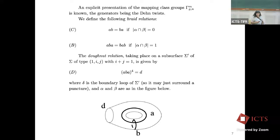I'm going to talk about the presentation of the mapping class group. This is extremely important because it's going to be one of the fundamental ingredients for the proof of the two-level theorem. This presentation will put the finger on the fact that the whole thing is made of little pieces put together, because every relation between the Dehn twists is a little relation living on a subsurface of small size. There are just four types of relations.